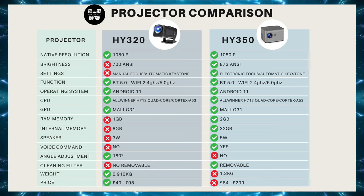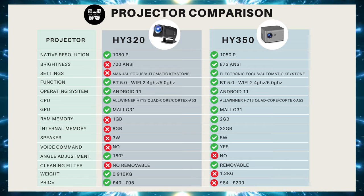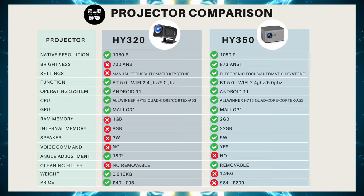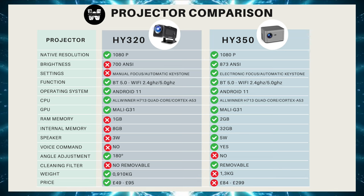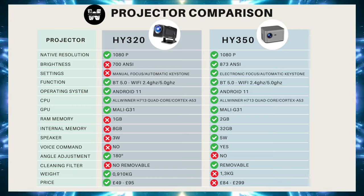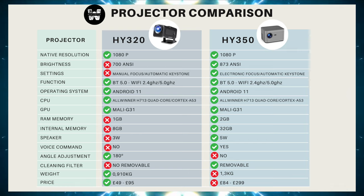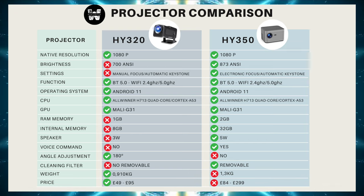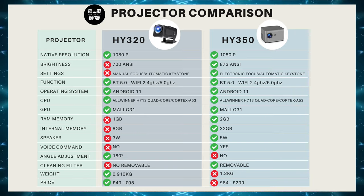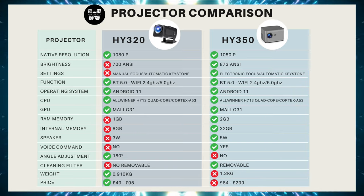Amazon may have more competitive prices, and the import tax values may also be different. In the final result of our comparison chart, the HY350 won with 12 points, and the HY320 got 8 points. The points the HY320 wins are very relevant — we're talking about price and mobility, which many people entering the world of projection nowadays prefer.